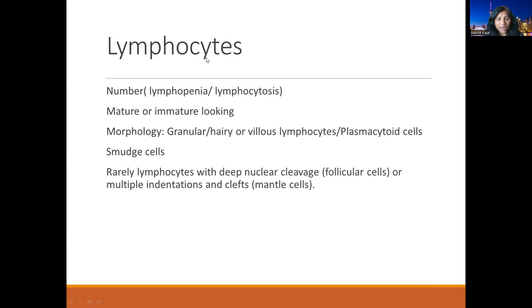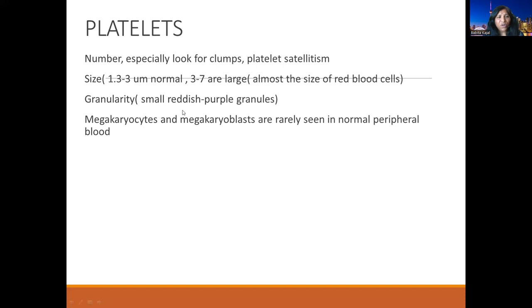Next, look at lymphocytes — their number (lymphopenia or lymphocytosis) and morphology (mature or immature). In the cytoplasm, look for granules, hairy or villous projections, or more blue cytoplasm indicating plasma cytoid cells. Also look for smudge cells in the background, especially in CLL. Very rarely, deep nuclear cleavage can be seen, indicating lymphoma cells — deep nuclear cleavage suggests follicular cells, while multiple indentations suggest mantle cells.